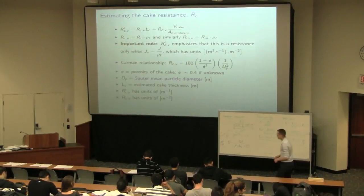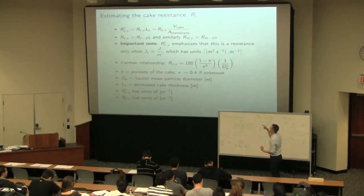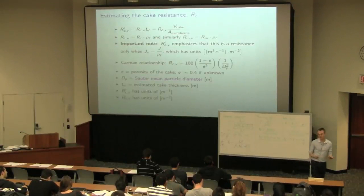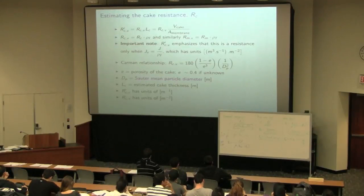The other way to interpret this cake thickness LC is we could, if we were given the volume of the cake divided by the membrane's area, we could assume that to be the cake thickness. And that's actually what can be done in practice. If you run your membrane for a period of time, rather than taking your membrane out and trying to measure the thickness of the cake buildup at multiple points on the membrane,